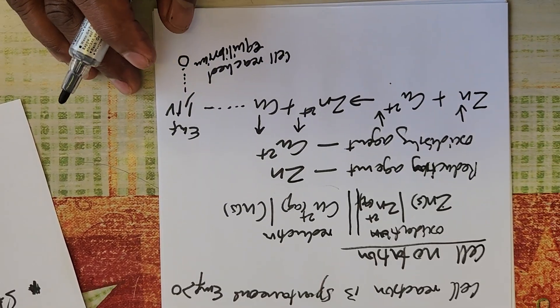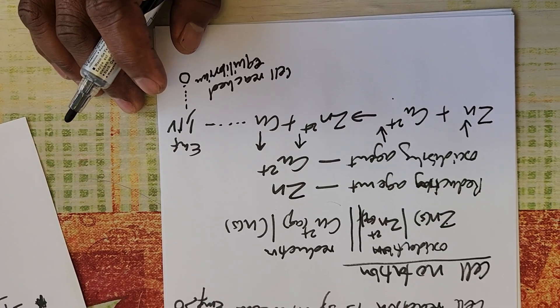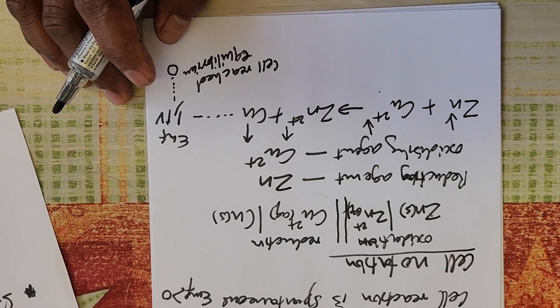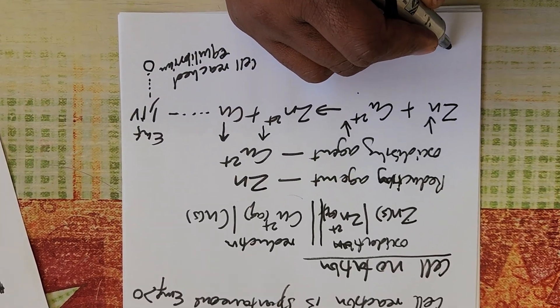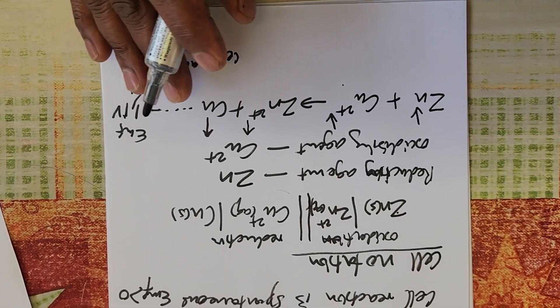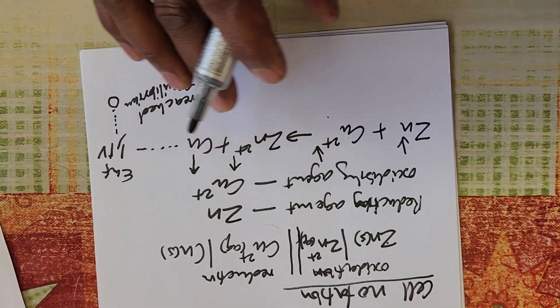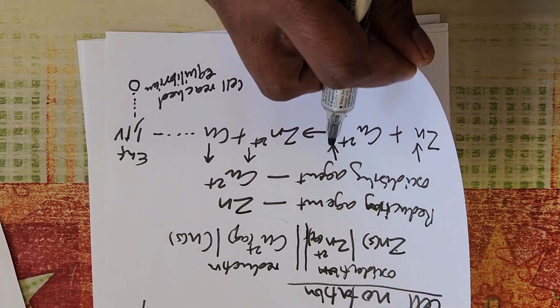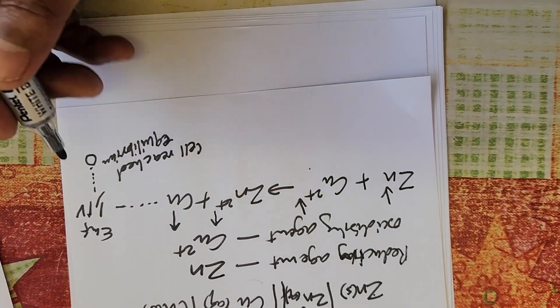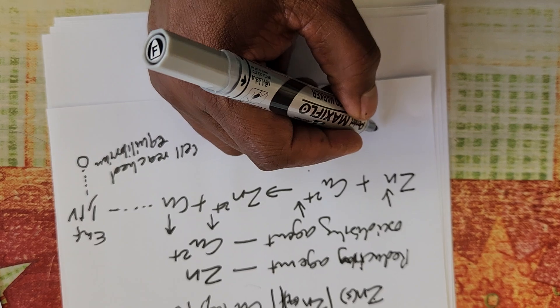When the cell has reached equilibrium, if we go back to the question of equilibrium, we say at equilibrium it means that the rate of the forward equals the rate of the reverse. We use that background here also to explain this.